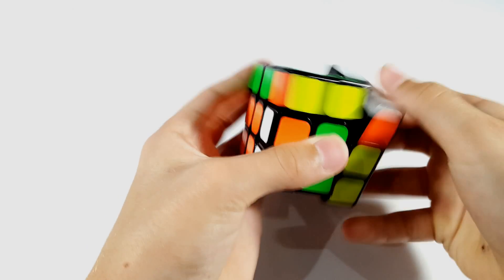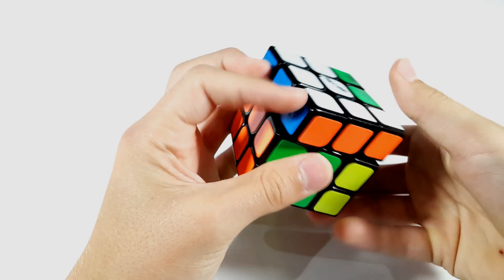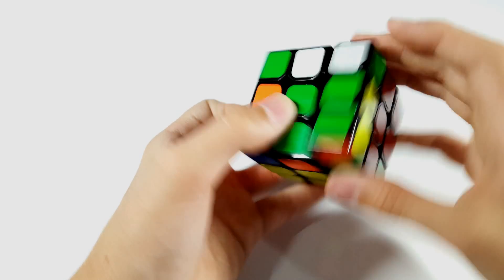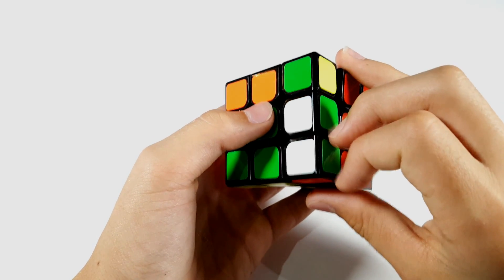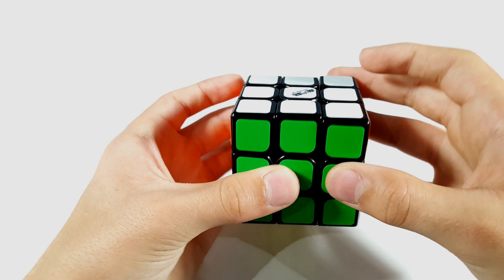you just do R U prime R2 like this, R U prime R2, then F prime R U R prime U prime R prime F, and then you just match these two up with R U R prime. So pretty fast and simple OLL.